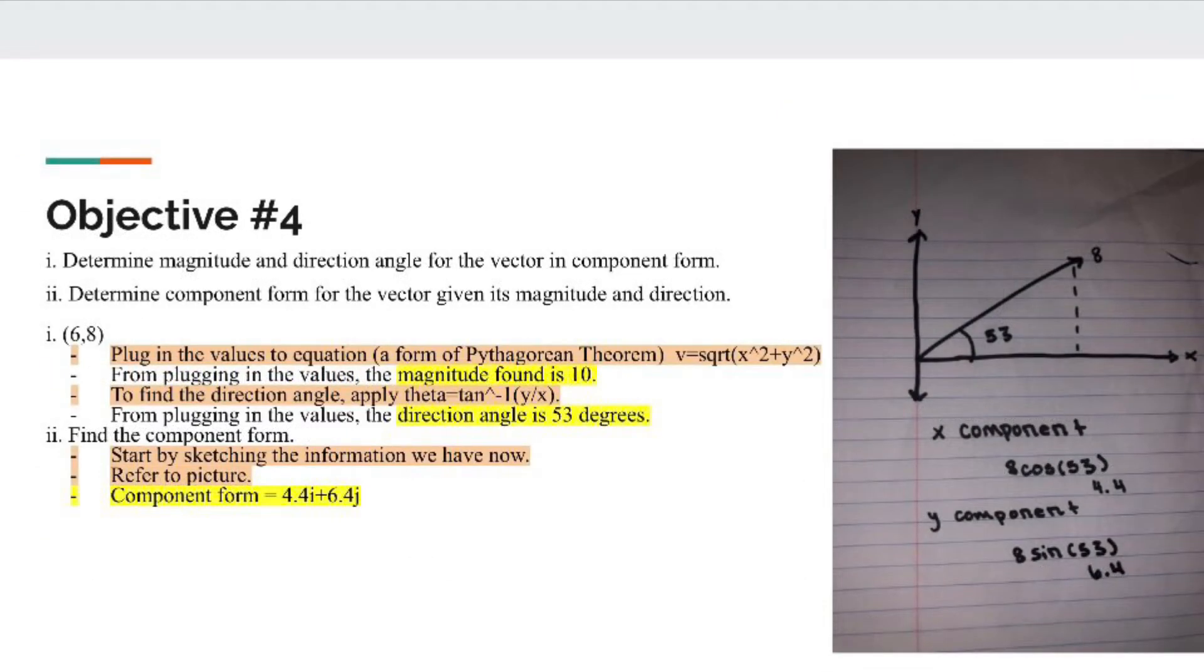The next objective asks us to determine the magnitude and direction angle for a vector in component form, as well as determine component form for the vector given its magnitude and direction. The example I created has x equals 6 and y equals 8.